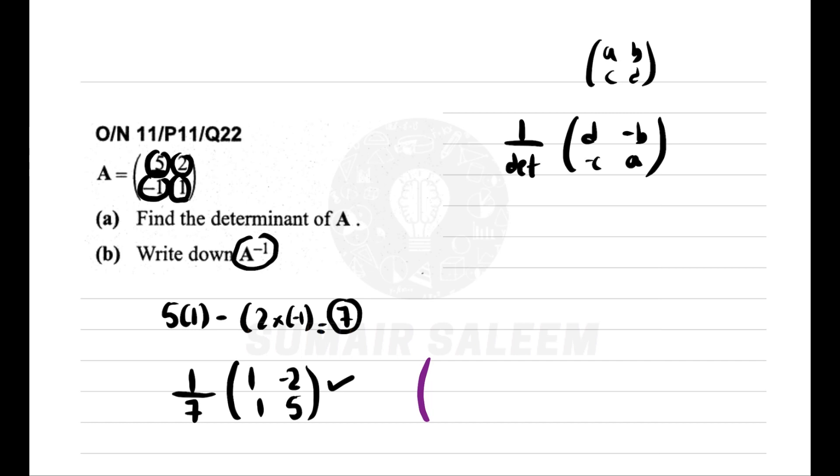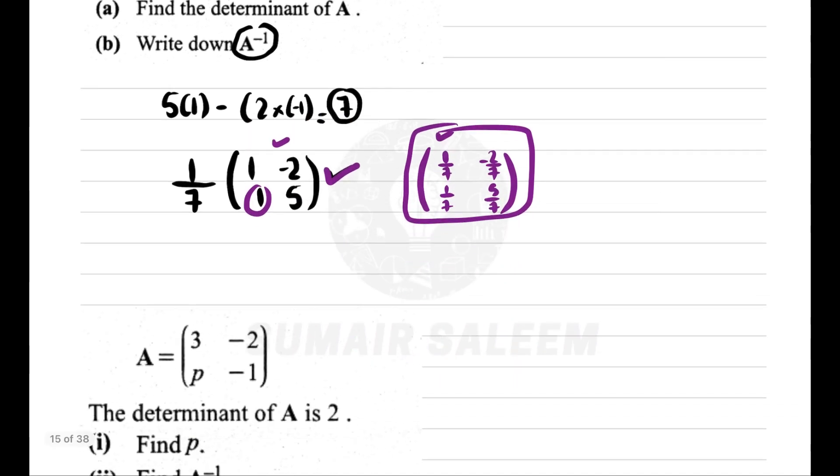But if you need to multiply inverse further, you need to multiply: 1 into 1 upon 7 makes 1/7, minus 2 into 1 upon 7 makes minus 2/7, and 5 upon 7. Both answers are correct. This multiplication is mandatory if you need to solve further, but if only inverse is asked, you can leave it.